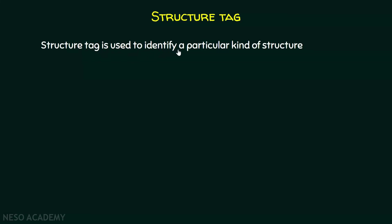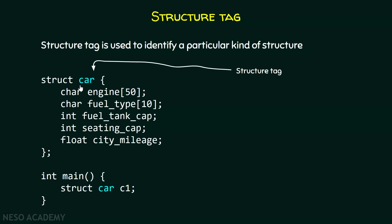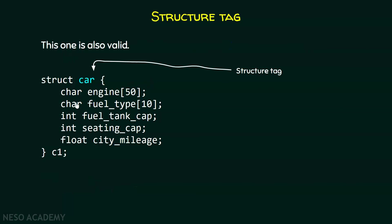A structure tag is used to identify a particular kind of structure. It is helping us to create a variable inside a function without specifying the whole structure within the function. We can also create a variable in global scope with the structure tag — there is no problem. But the actual use of a structure tag is what we have already discussed.